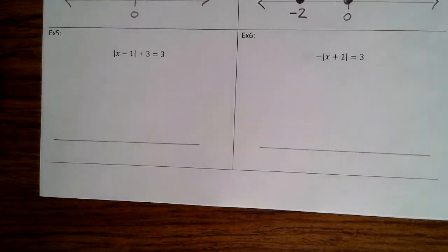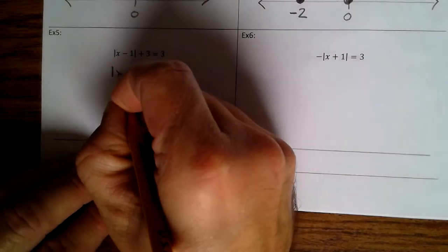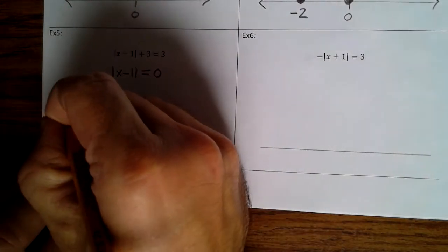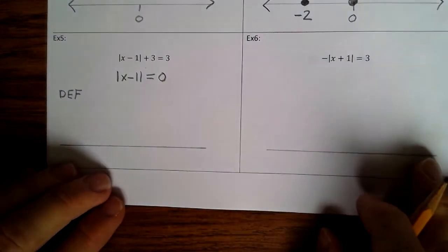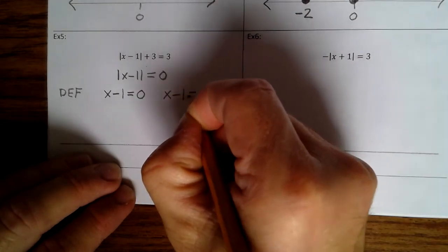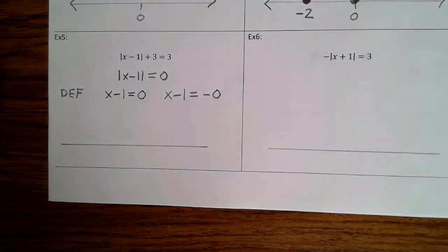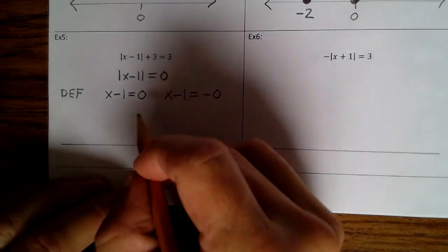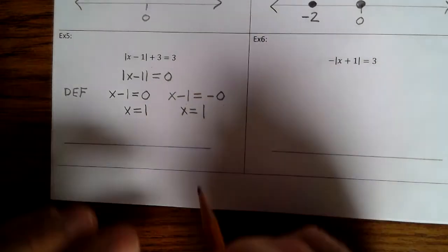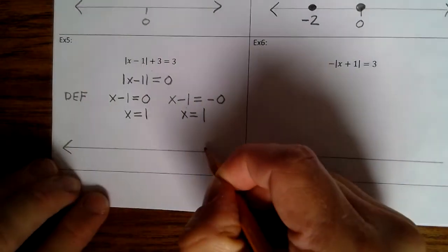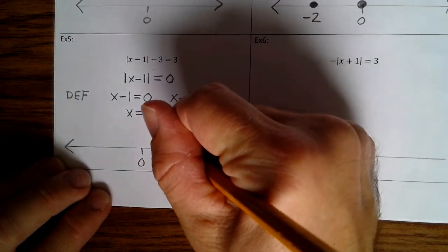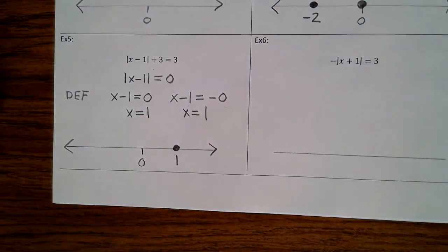All right, example 5. We're going to isolate the absolute value, so we're going to subtract 3 from both sides: absolute value of x minus 1 equals 0. We're going to apply the definition: x minus 1 equals 0, and x minus 1 equals negative 0. We add 1 to both sides: x equals 1. We add 1 to negative 0: x equals 1. So we only have one solution, and that solution is 1. Finish up example 5.